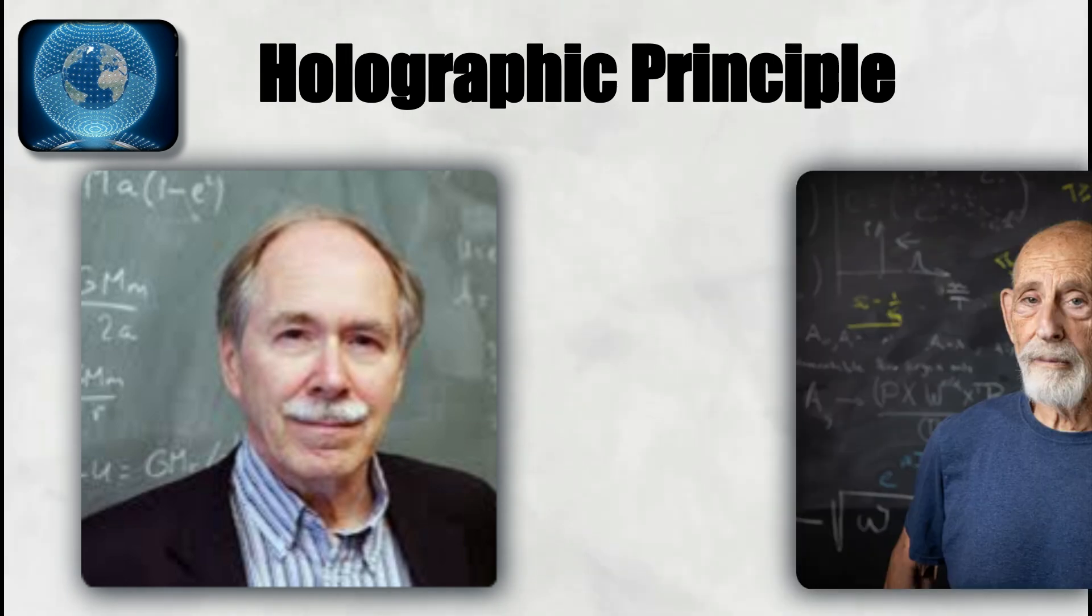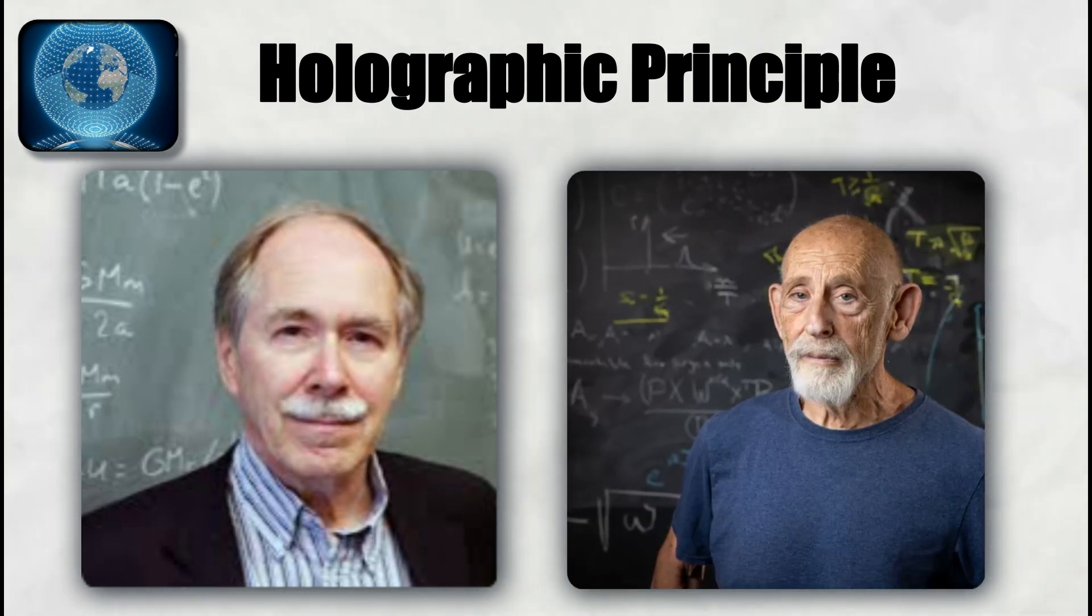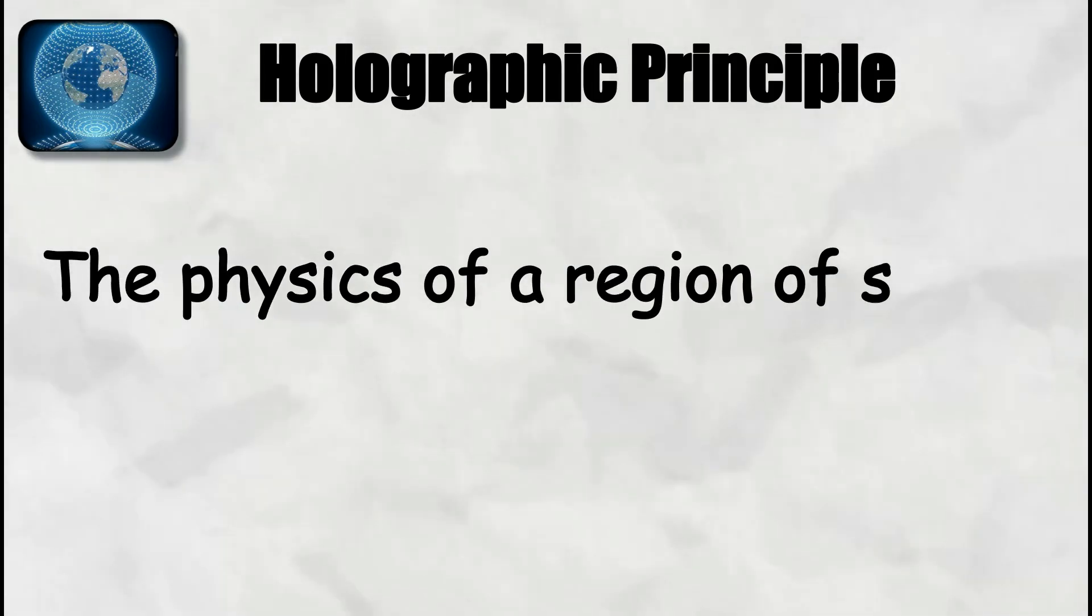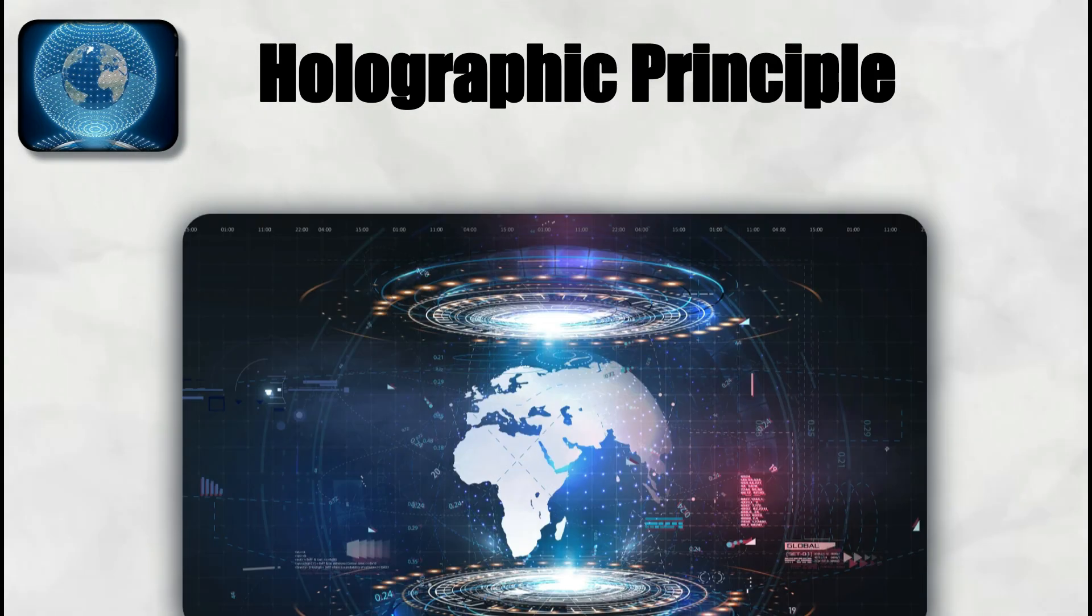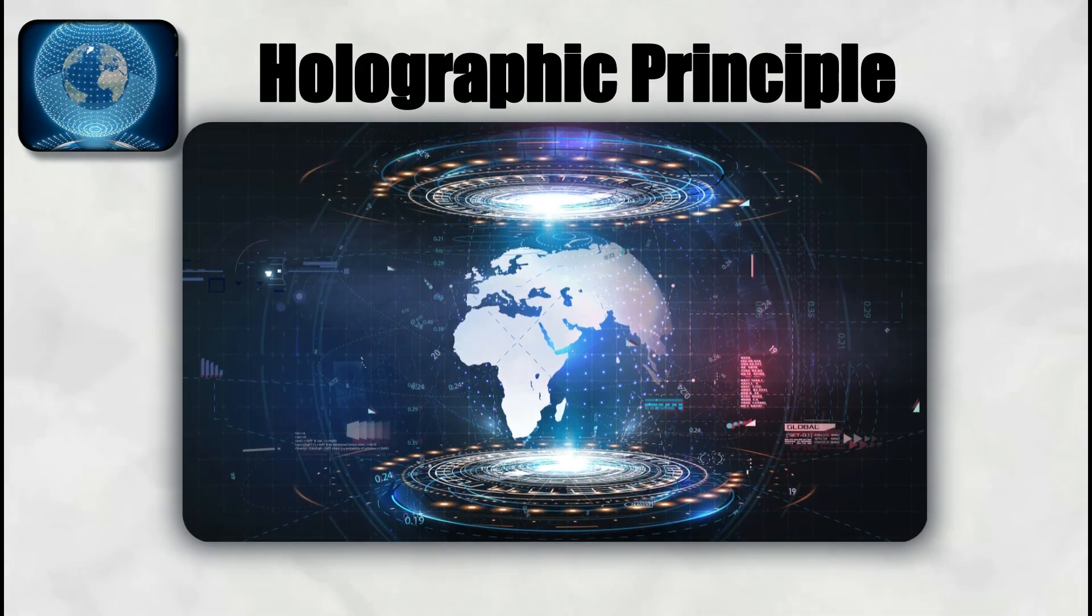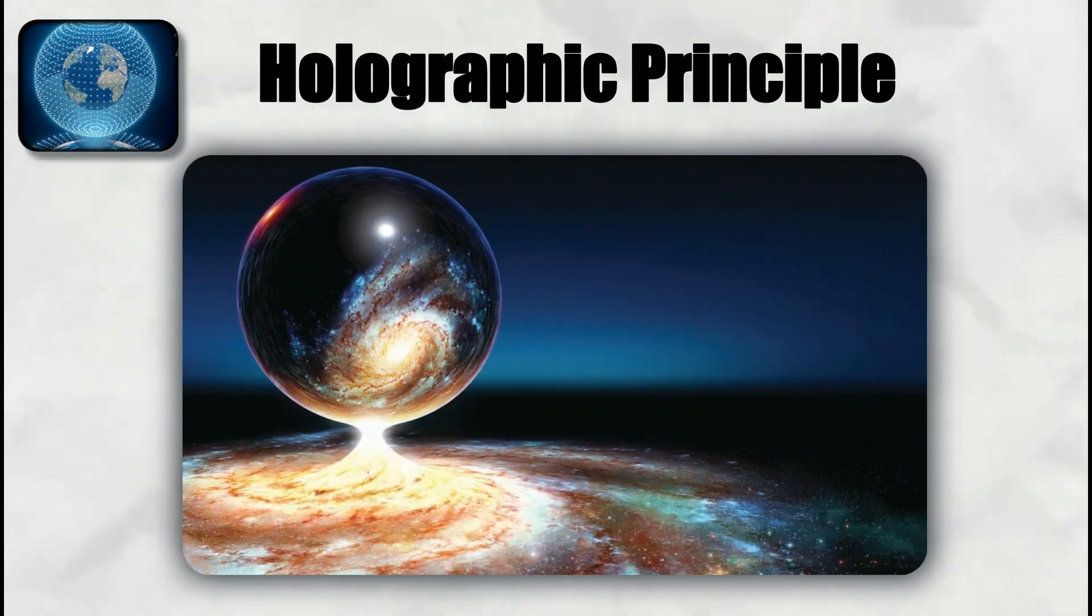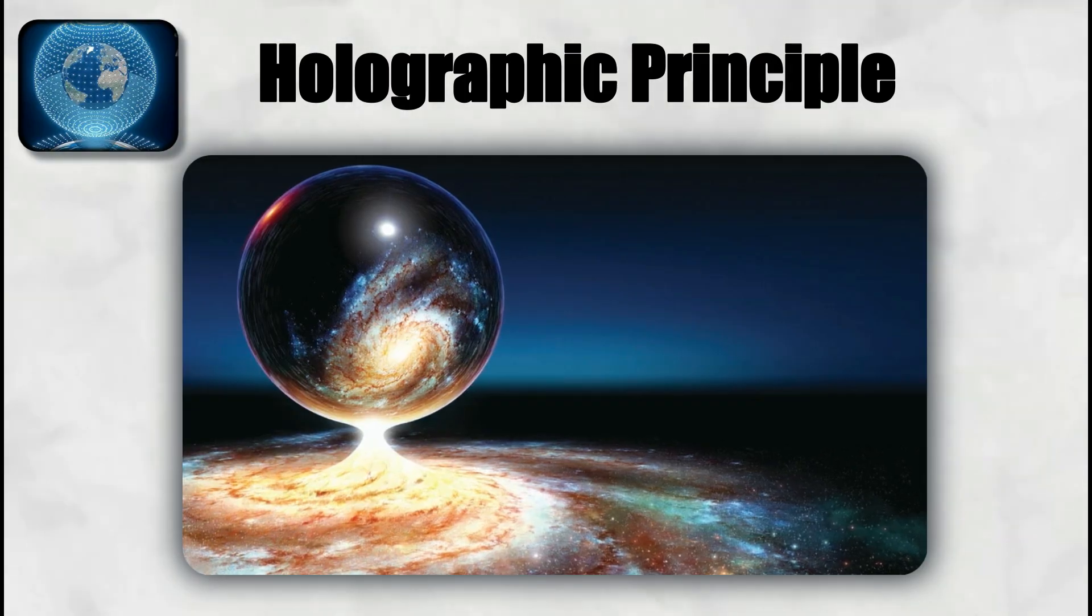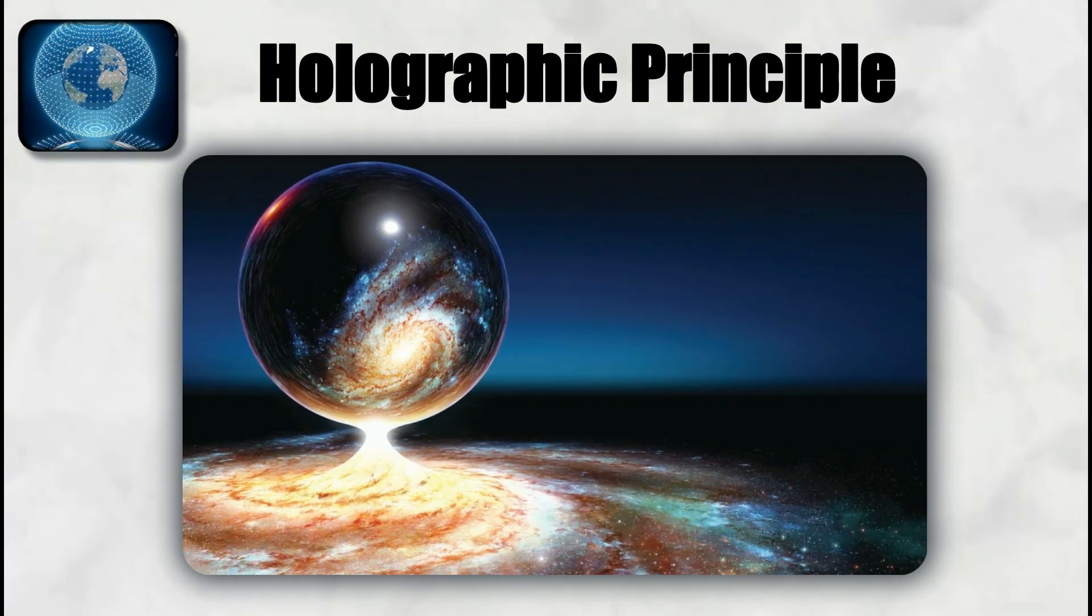Gerard 't Hooft and Leonard Susskind in the 1990s proposed the holographic principle as a general statement. The physics of a region of space can be fully represented by information on its boundary. The analogy is with a hologram, a two-dimensional sheet that encodes a three-dimensional image. In the holographic view, our three-dimensional world could be a projection from fundamental data stored on a distant two-dimensional surface.